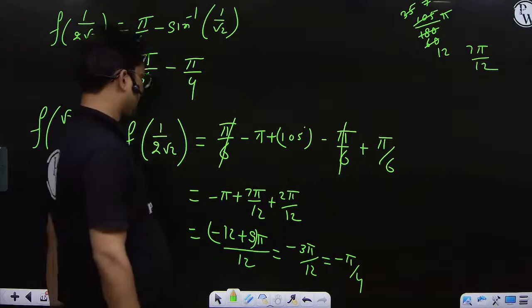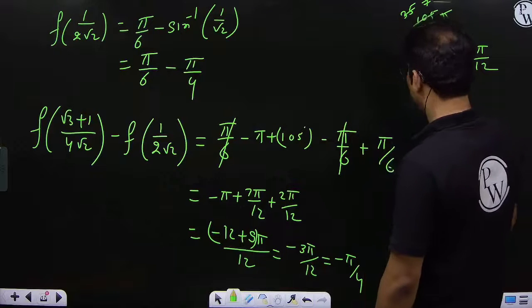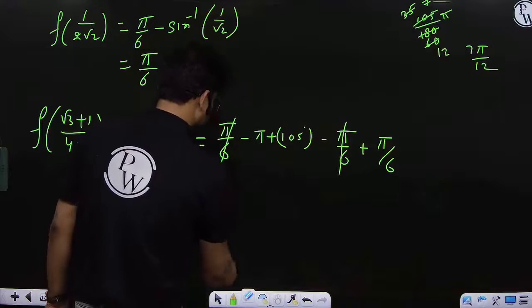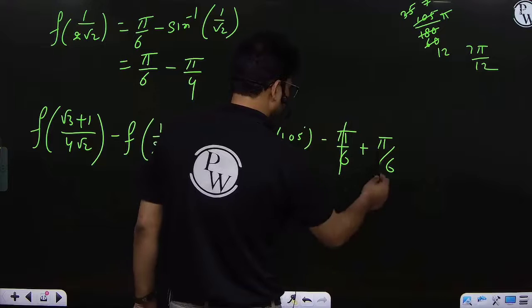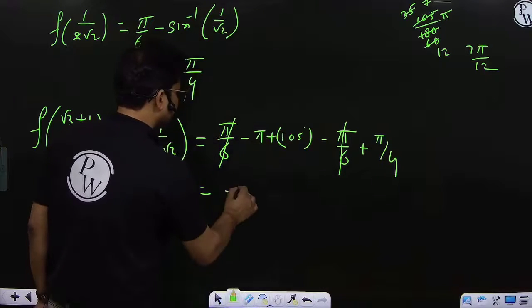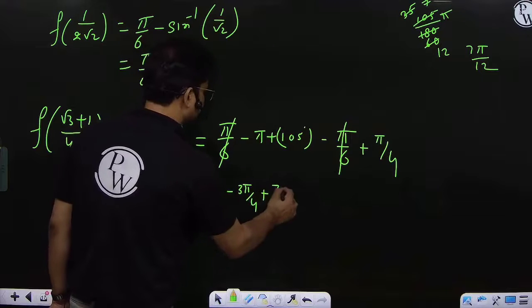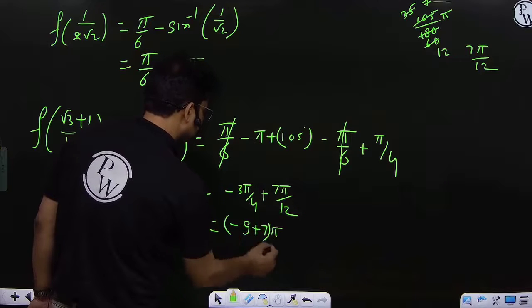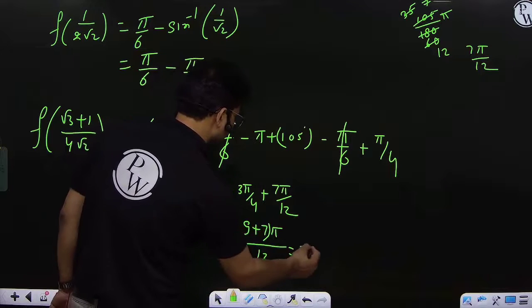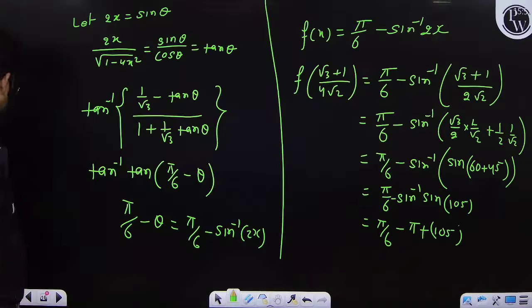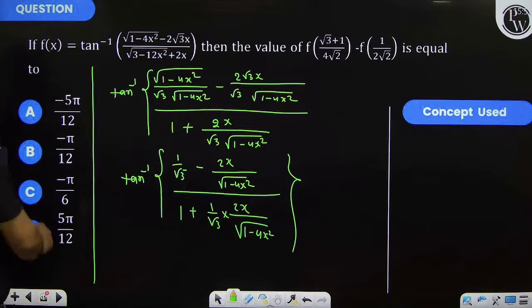Coming to the point, this is π/4. So: -3π/4 + 7π/12 = (-9π + 7π)/12 = -2π/12 = -π/6. So the answer is minus π/6.